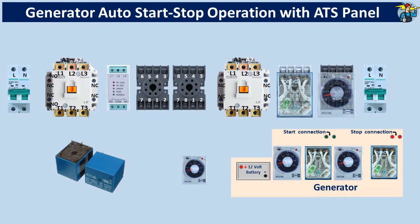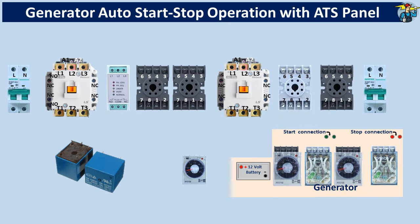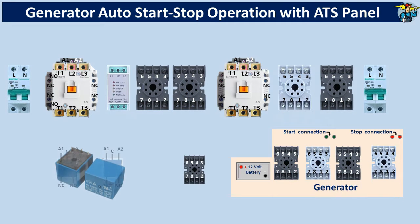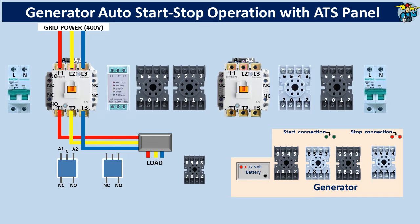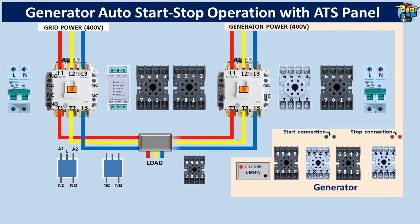Pulling the timers and relays out of their bases reveals the numbered terminals. 3-phase 400V power lines from the mains are connected through the contactor to the load. 3 generator power connection lines are also connected to the load through the other magnetic contactor. Now, connect 3-phase lines of the grid to the phase failure relay.